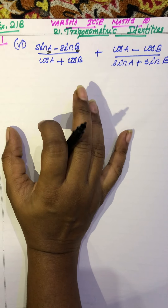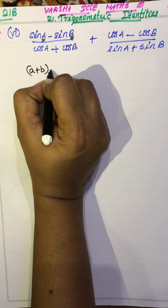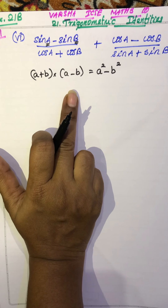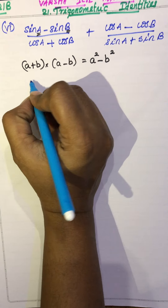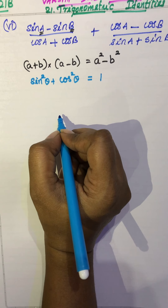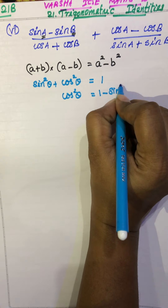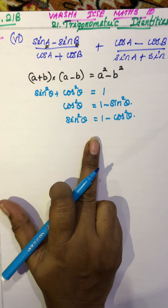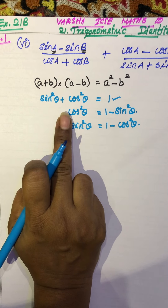This is a very simple sum. We are going to use an algebraic identity: (a + b)(a - b) = a² - b². We are also going to use the trigonometric identity: sin²θ + cos²θ = 1. From this one identity we can derive: cos²θ = 1 - sin²θ, and sin²θ = 1 - cos²θ. So from one identity we get two results.